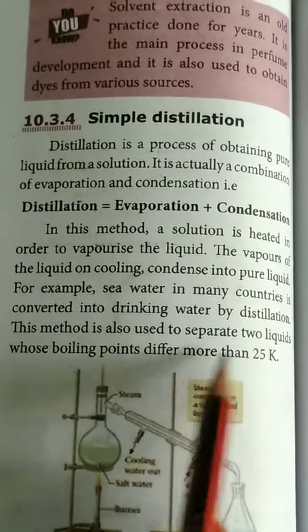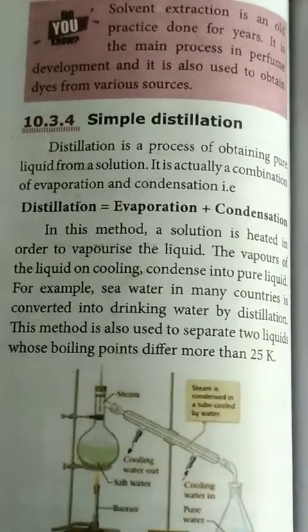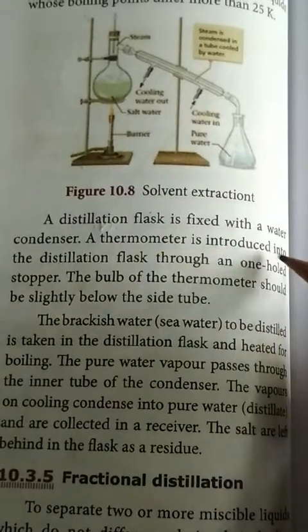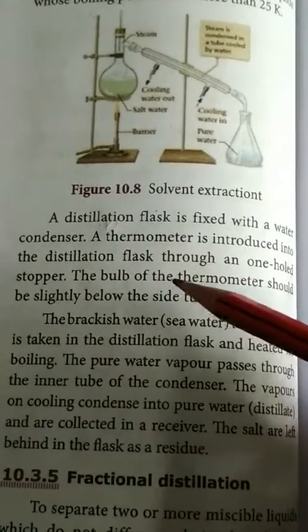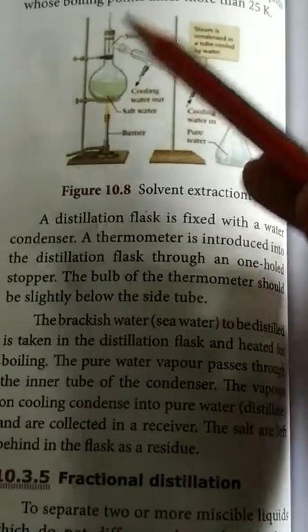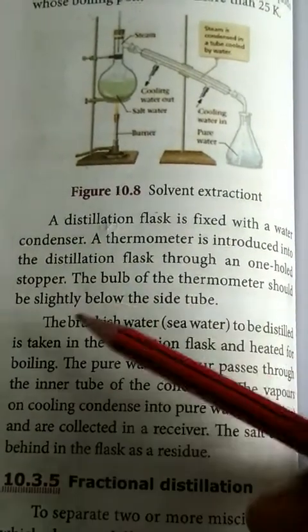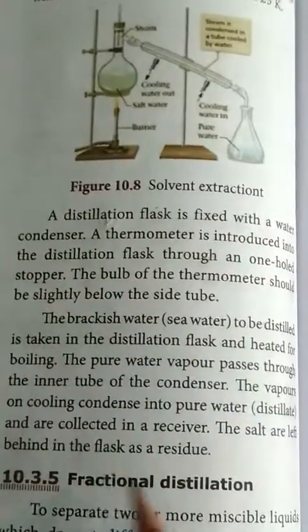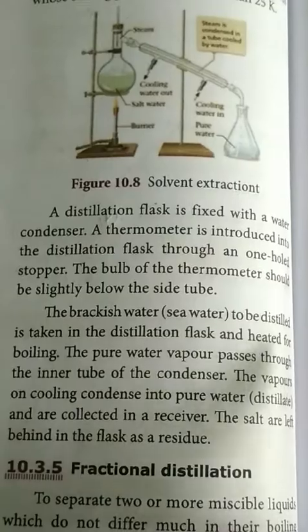This method is also used to separate two liquids whose boiling points differ by more than 25 Kelvin. In the distillation setup, a distillation flask is fitted with a water condenser. A thermometer is introduced into the distillation flask through a one-hole stopper, and the bulb of the thermometer should be slightly below the side tube.